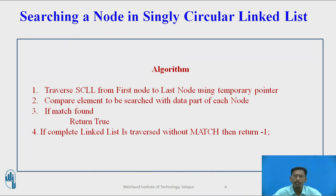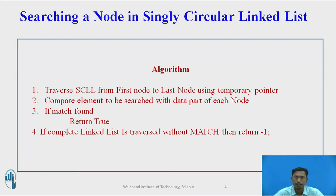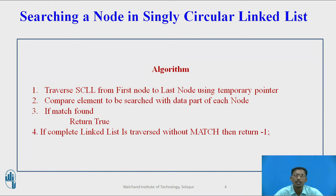Using the temporary pointer, traverse from first to last. Don't change the value of start — start will always hold the address of the first node. Step 2: compare the element to be searched with the data part of each and every node while traversing from first node to last node.